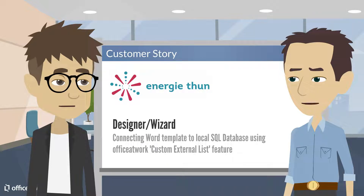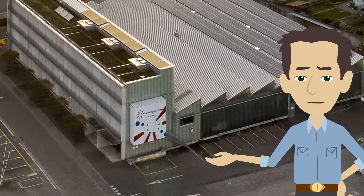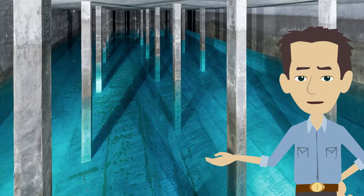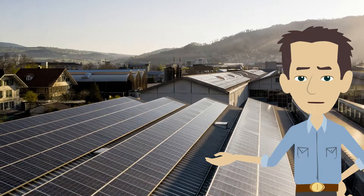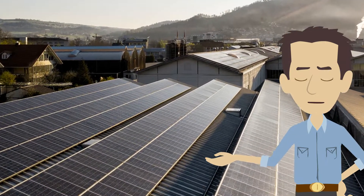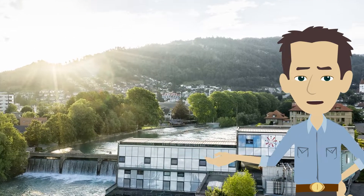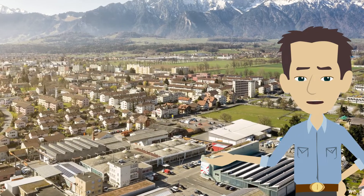Let me start with a quick introduction of Energy Toon to our audience. The Energy Toon core business is the construction and operation of utility infrastructure, the procurement, production, and sales of electricity, gas, heat, and water. We have just over 100 employees working from various locations.